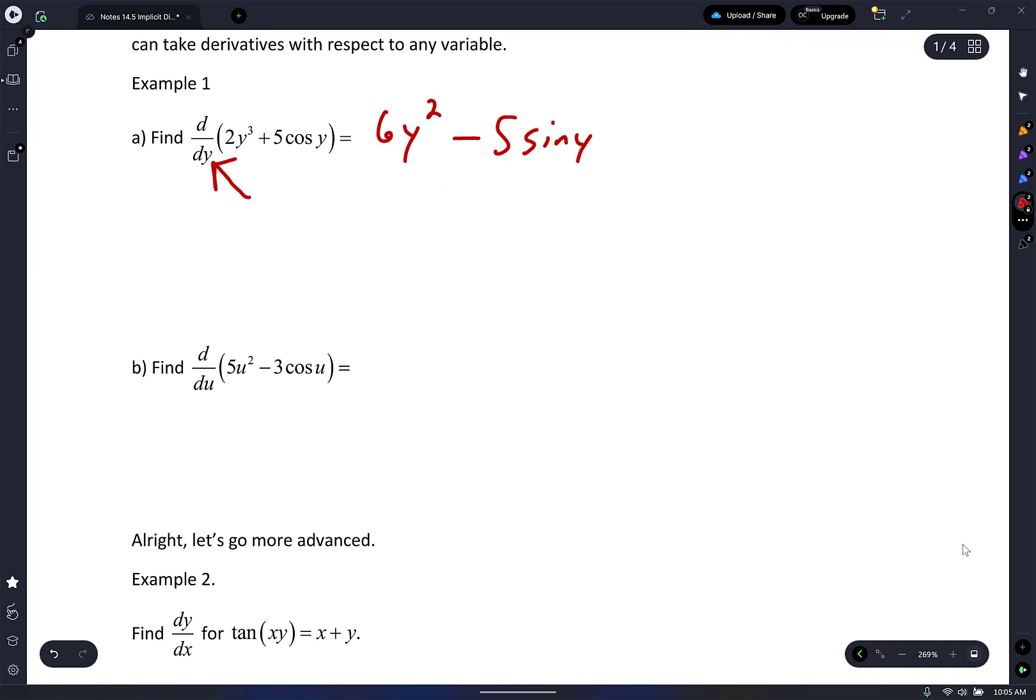And then letter B, I don't think you guys have any issues with this. What's the derivative of 5u² with respect to u? 10u. And the derivative of 3 cosine u? Negative 3 sine u. It's minus a negative, so it turns to positive. Good job.